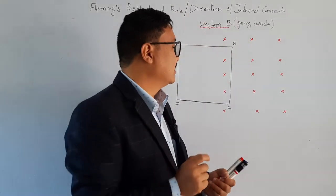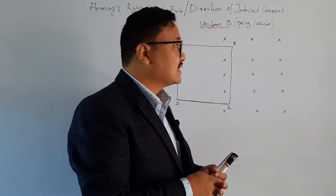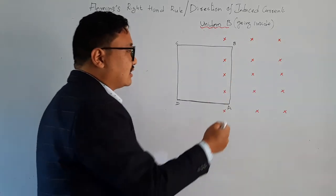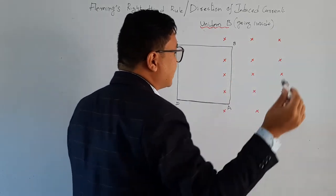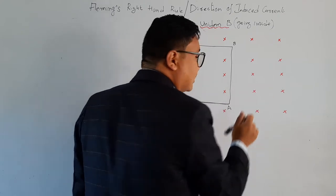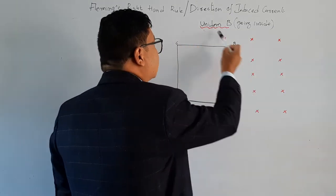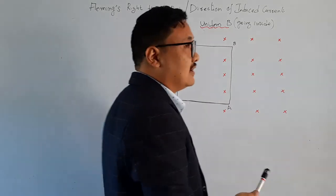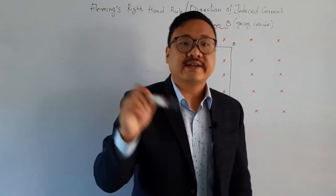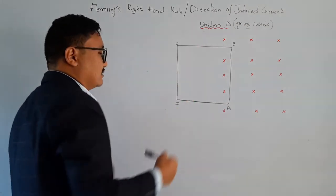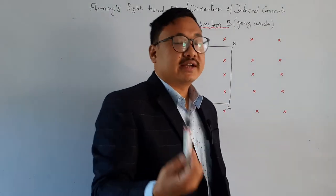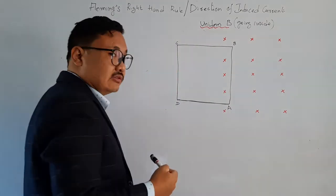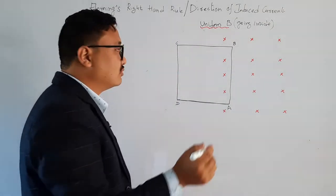To start with, let us consider a uniform magnetic field going inside — if there is a cross, it means the magnetic field is going inside or going away from us. B is the notation for magnetic field. Let us consider a rectangular coil A B C D. So A B C D is a rectangular coil which is moving.